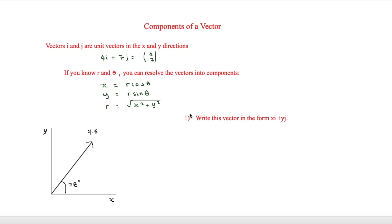This is I'm Stark and in this video we are looking at the components of a vector. So vectors i and j are unit vectors in the x and y directions. And it's important that we get used to this notation of using i and j.